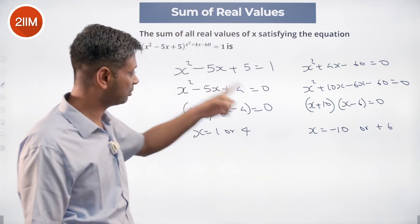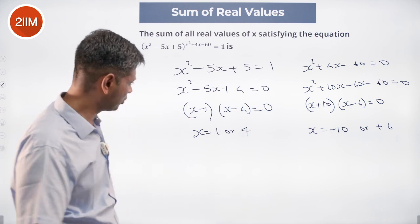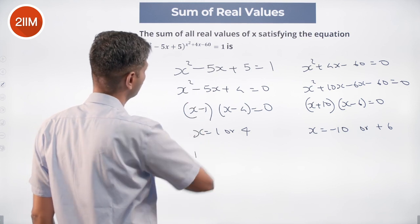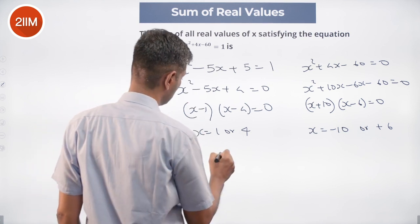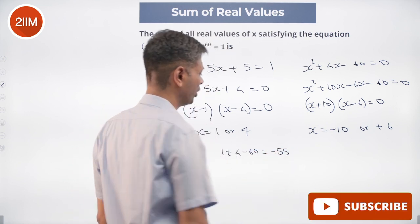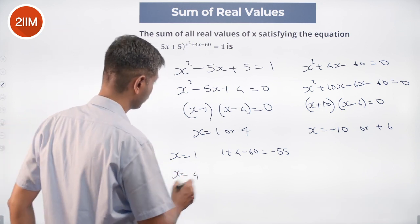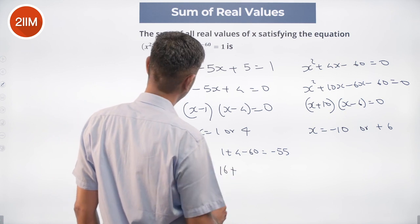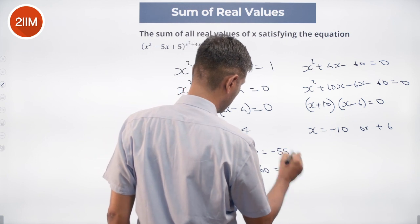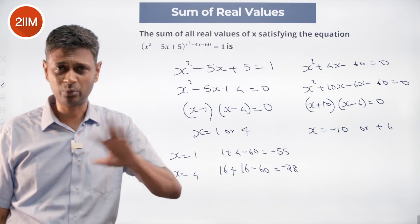What does this become when x is minus 10 or plus 6? 1 or 4. What does this become when it is 1 or 4? I'm going to substitute x = 1 here. x² + 4x - 60, this will become 1 + 4 - 60, which is -55. 1 power -55 is 1, that is alright. I substitute x = 4. 4² is 16 plus 4 into 4 is 16 minus 60. 32 - 60 which is -28. 1 power -28 that is 1, that one is beautiful.